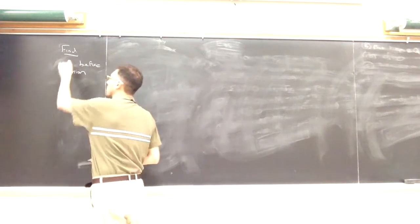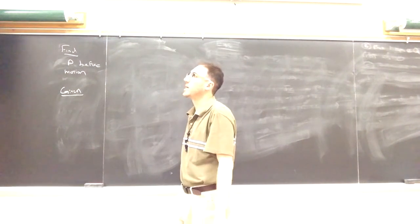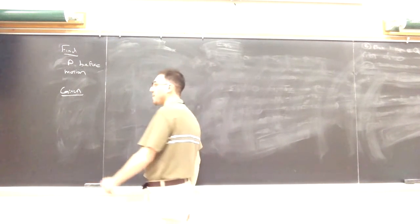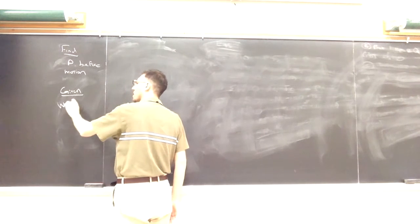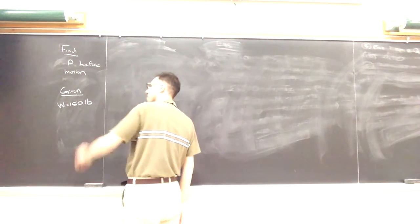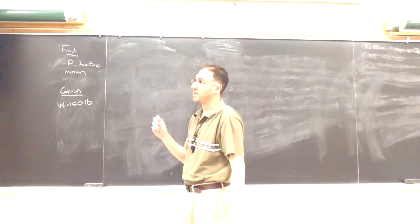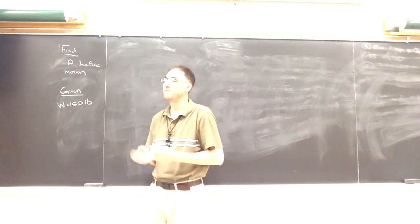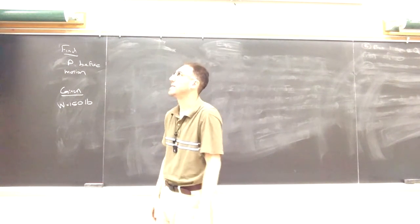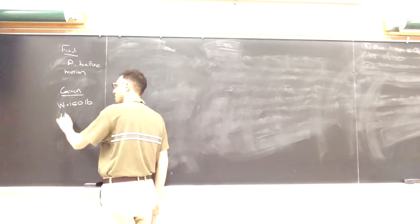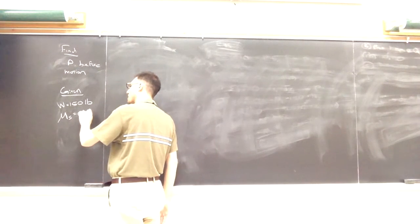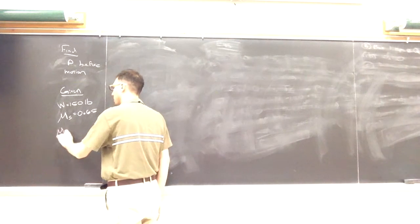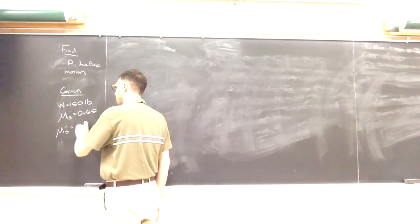We want to find the amount of force before motion occurs. We're told the boxes are homogeneous and each box weighs 150 pounds. The top box and the bottom box are not rigidly connected, but there's friction between them. Between the boxes, mu_s is 0.65. There's also friction between the bottom box and the floor, and that coefficient is 0.35.